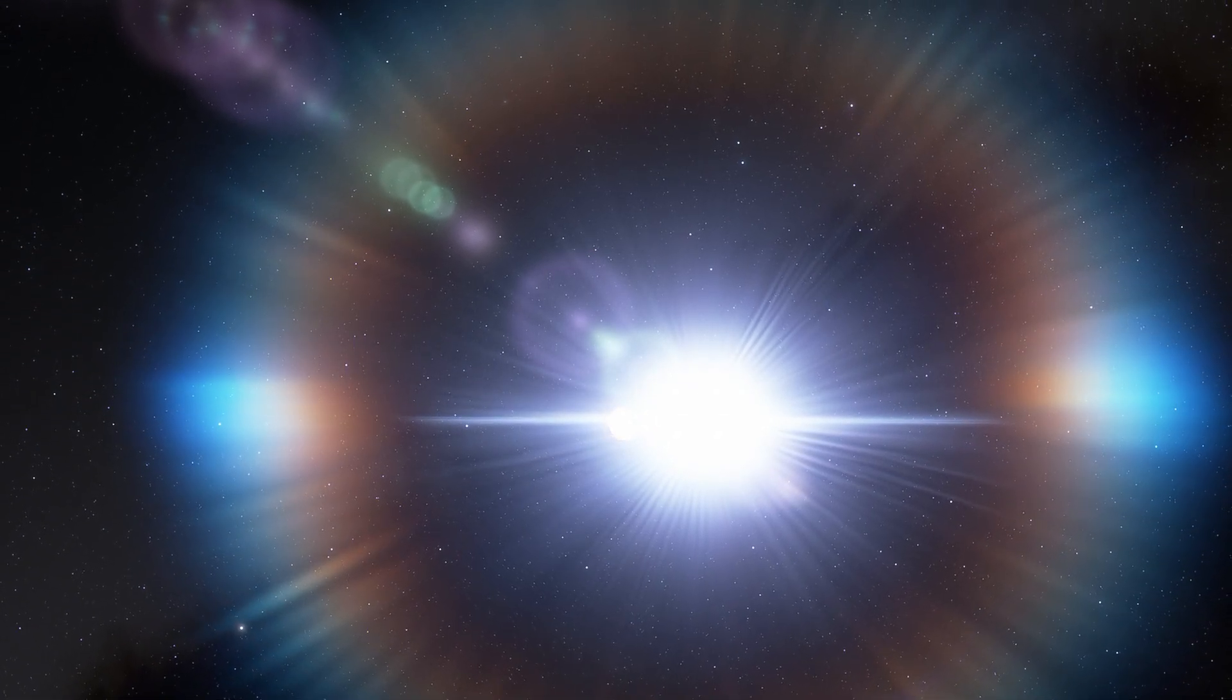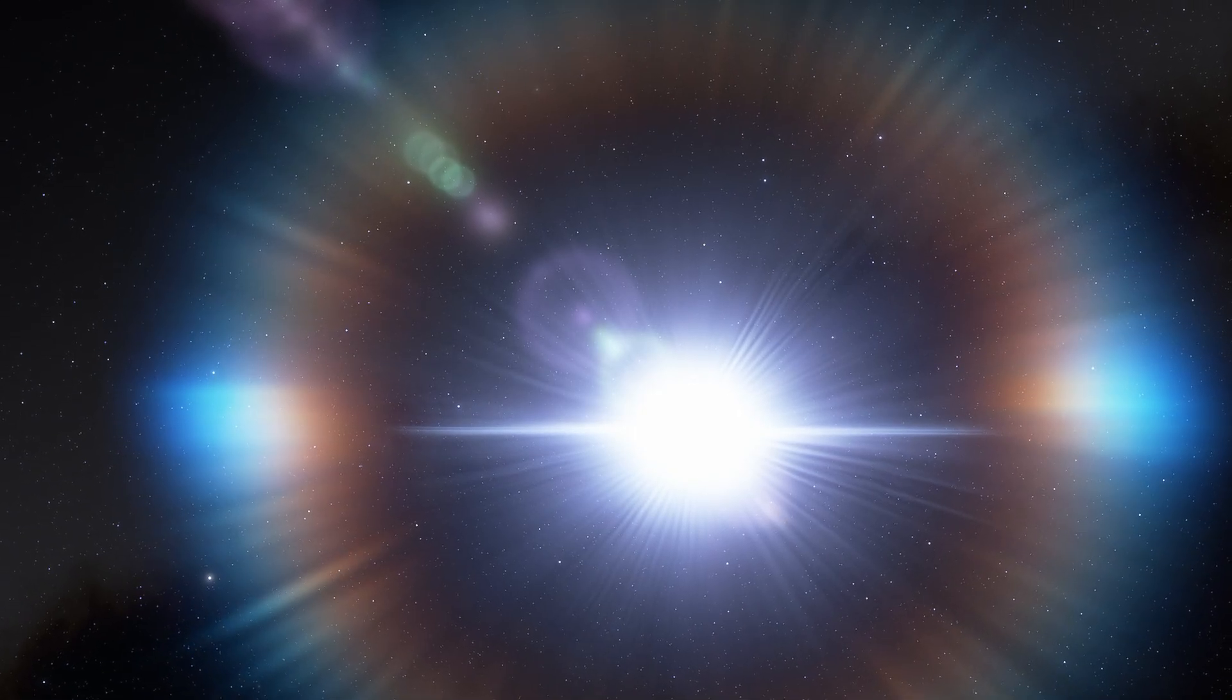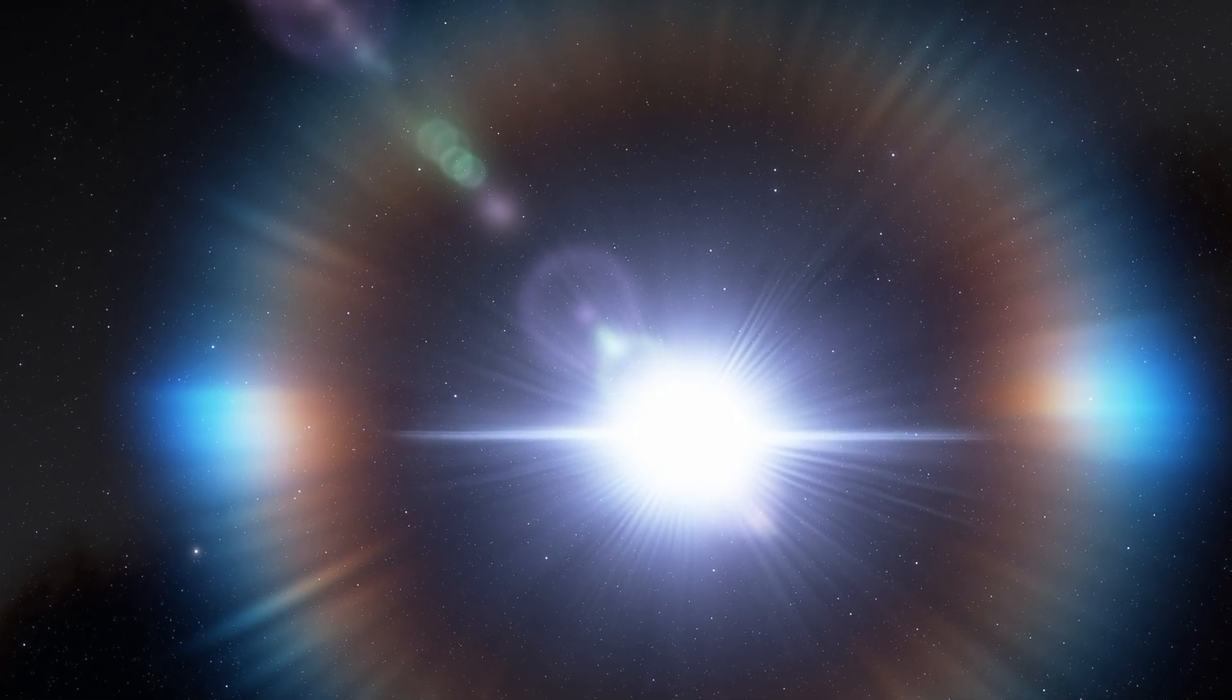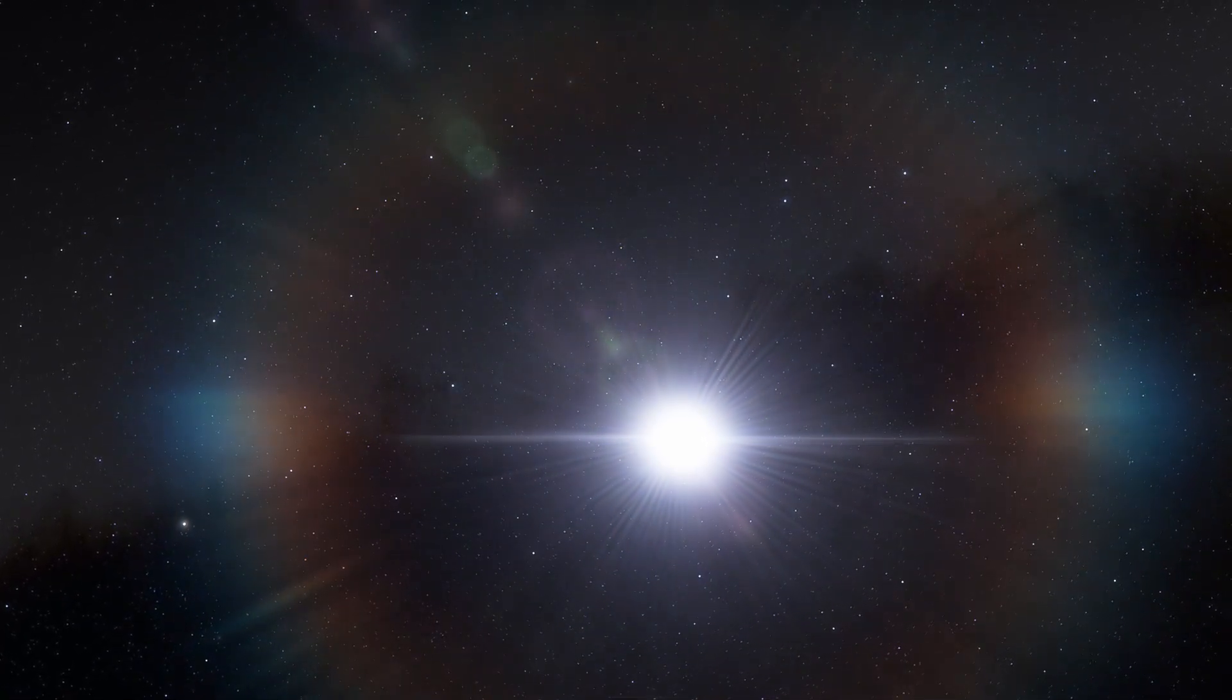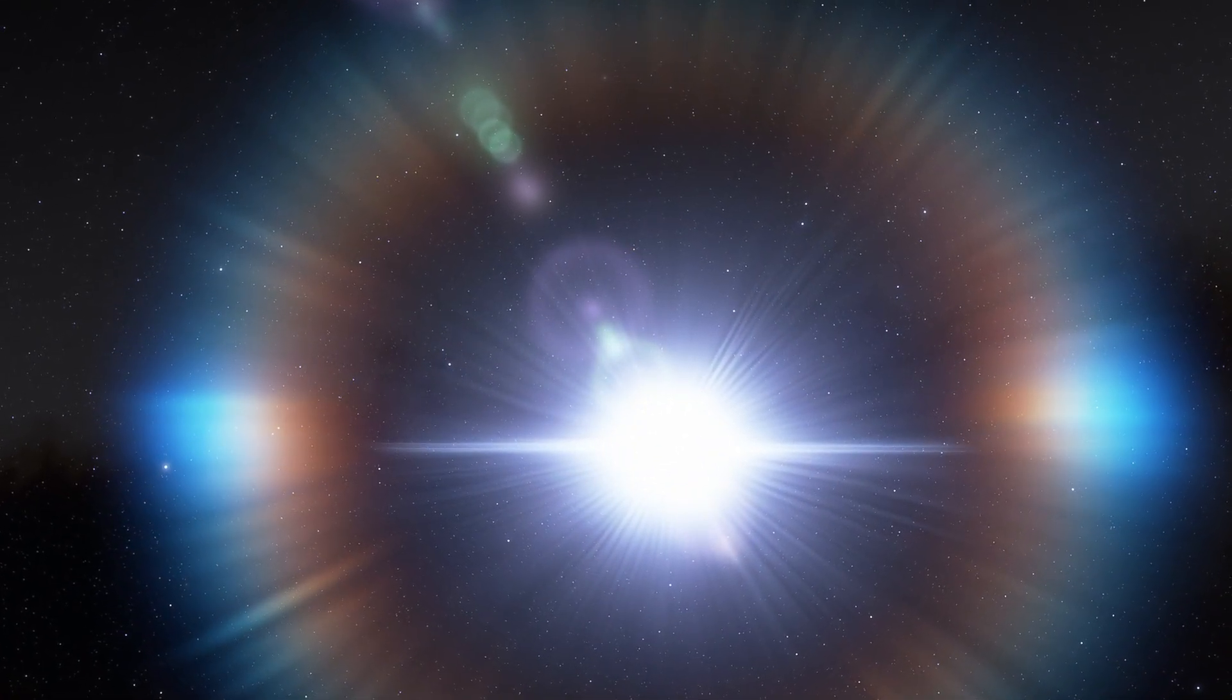The object in M51 was discovered using transits, which occur when an object passes in front of a star. When it does this, some of the star's light is blocked, resulting in a brief dip in brightness.